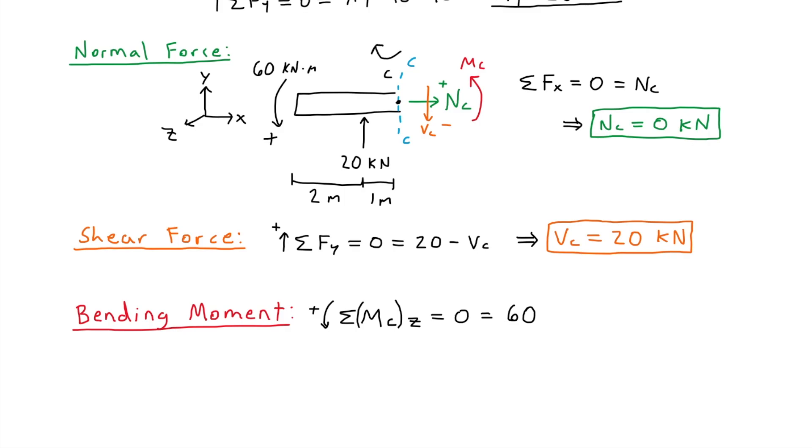Taking the moment from C to A, this is going to be negative, since it's clockwise. So that would simply be negative 20 kilonewtons times the 1 meter. And then finally, plus MC, since MC is going in the counterclockwise direction.